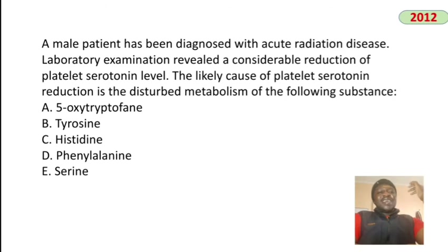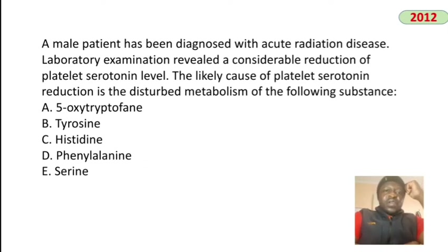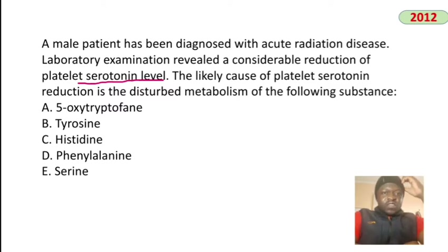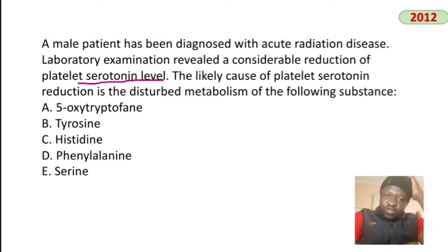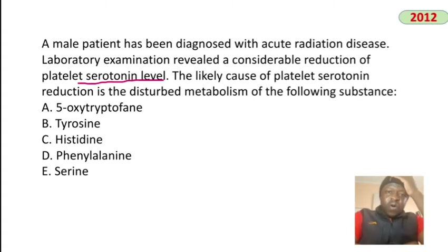A male patient with acute radiation disease has a considerable reduction of platelet serotonin. The likely cause is disturbed metabolism of the precursor — serotonin is also known as 5-hydroxytryptophan (5-oxytryptophan). The answer is 5-oxytryptophan.